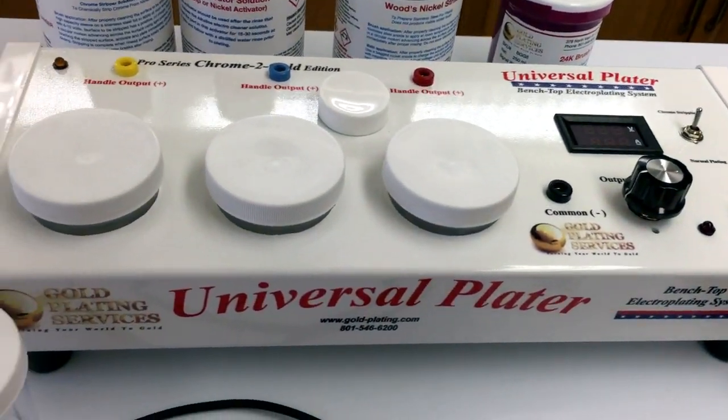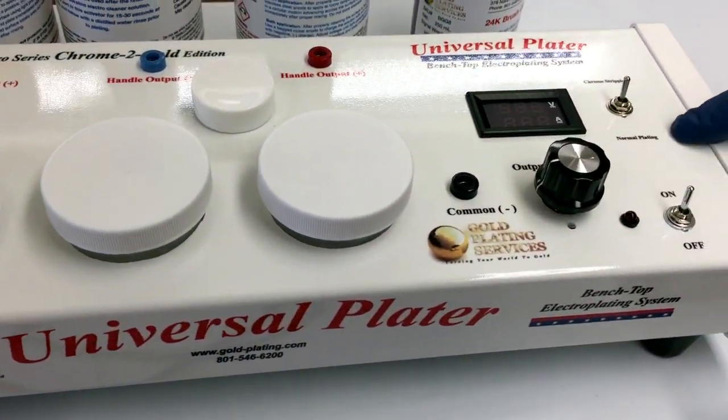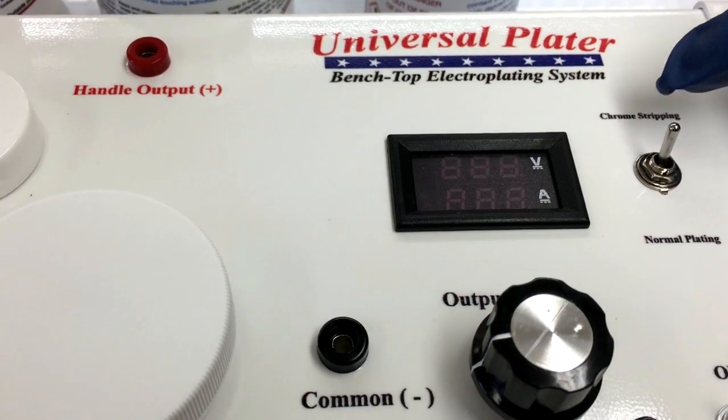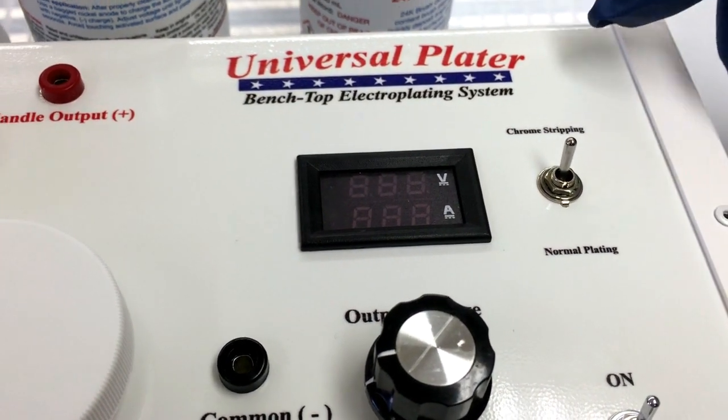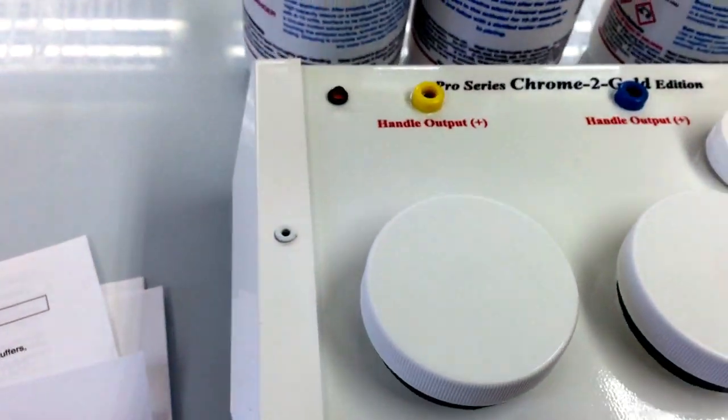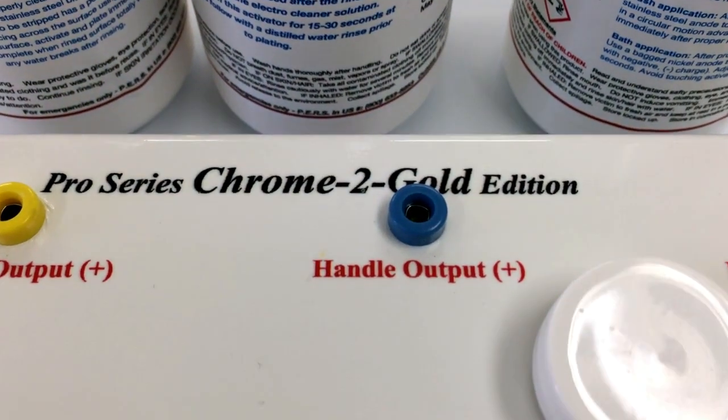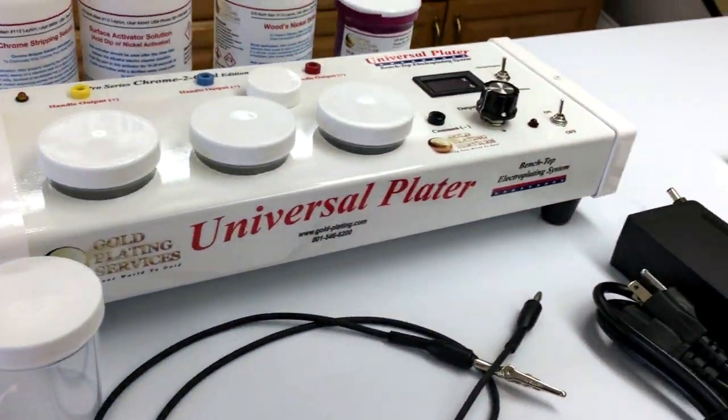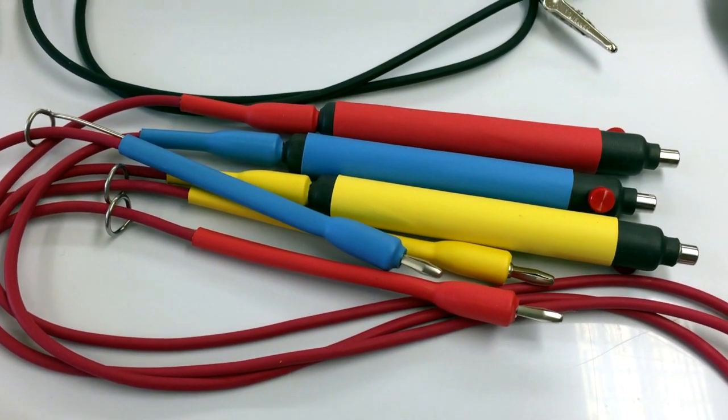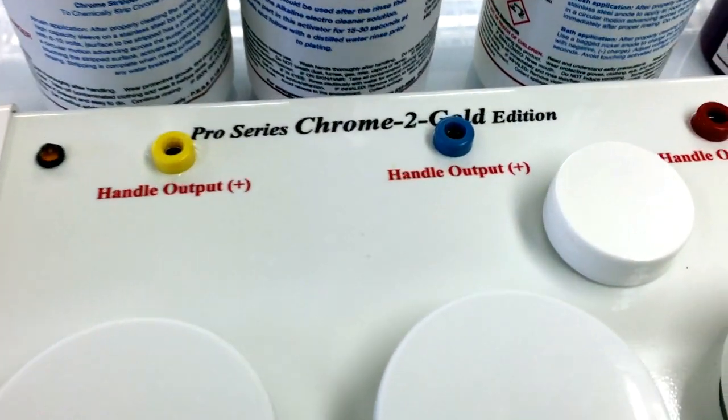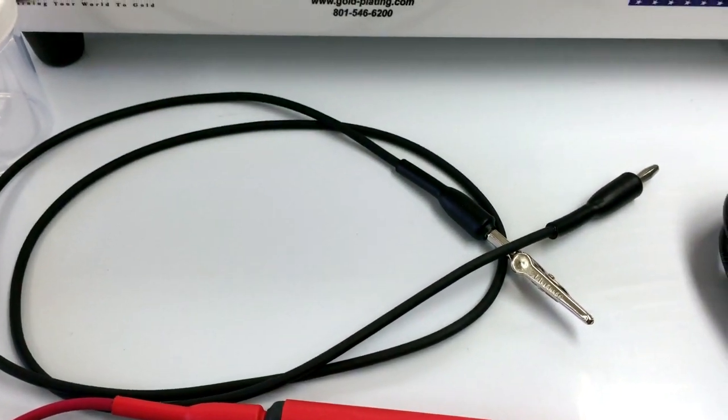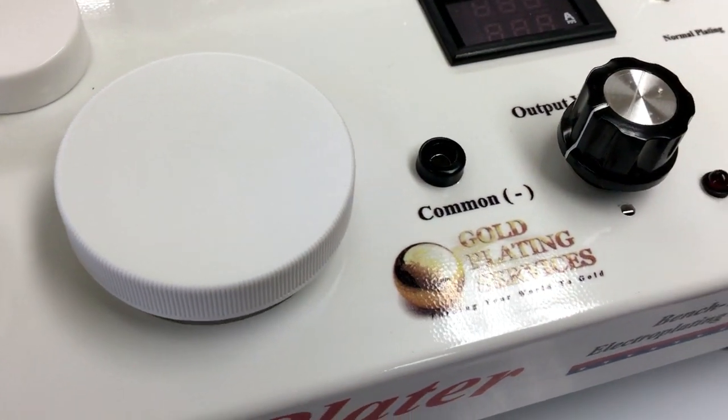First of all, it comes with the Universal Plater Chrome console with chrome stripping ability. You can switch between chrome stripping and normal plating with the mode switch, power switch. It comes with three color-coded handles—red, blue, and yellow—that plug into the red, blue, and yellow ports. We have the black common lead which plugs into the black common port.